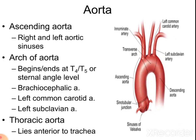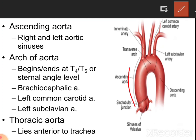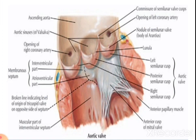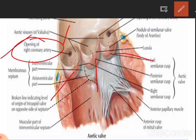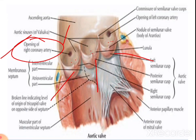The aorta has parts: the ascending aorta, the arch of aorta forming an arch-like structure, and the descending thoracic aorta. At the base of the aorta there are three semilunar cusps. Between the wall of the aorta and each cusp is a space known as the aortic sinus, in which there are small openings for the coronary arteries that supply the wall of the heart.